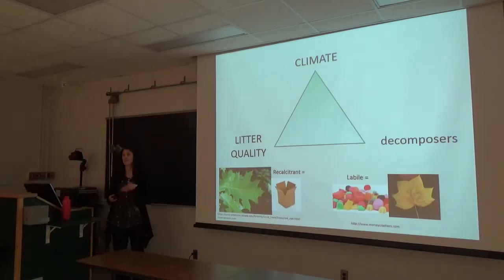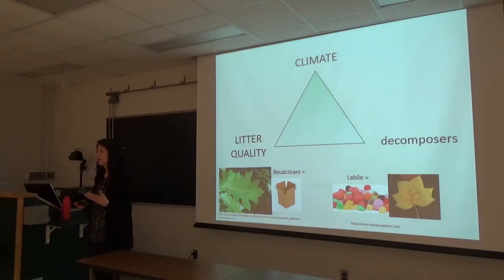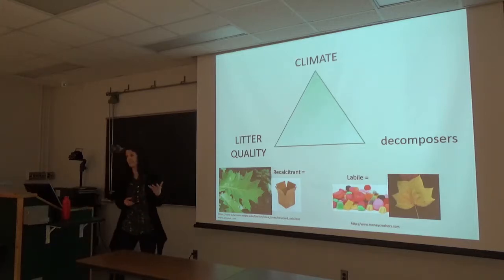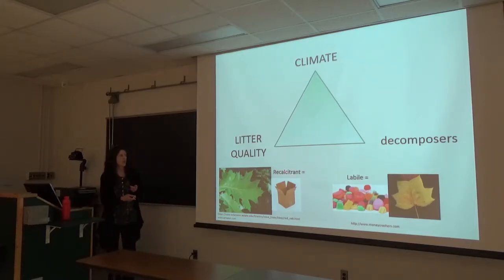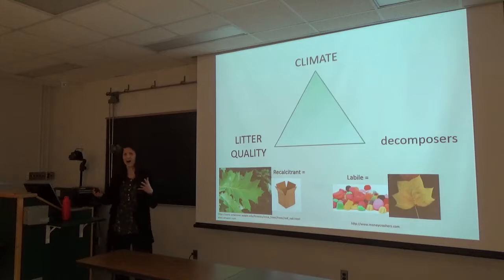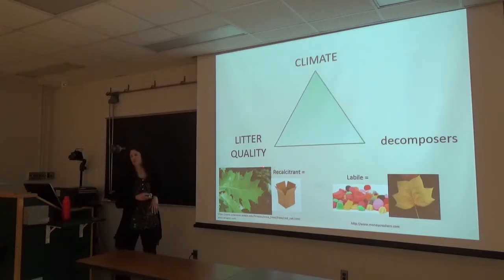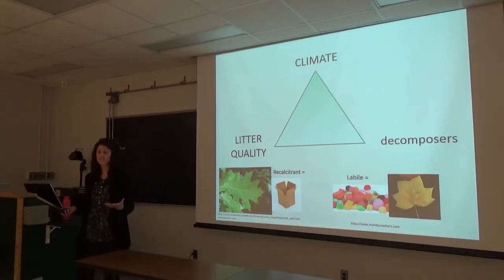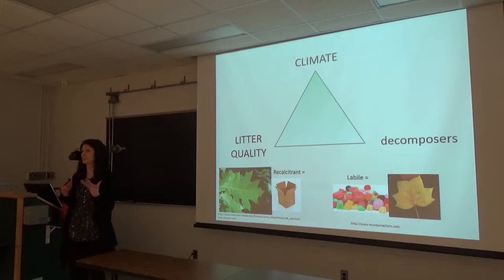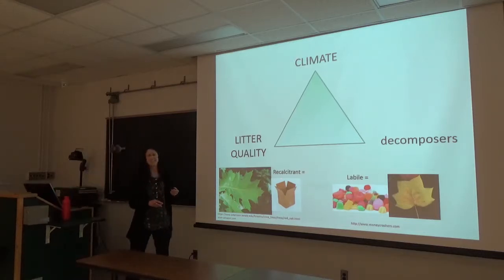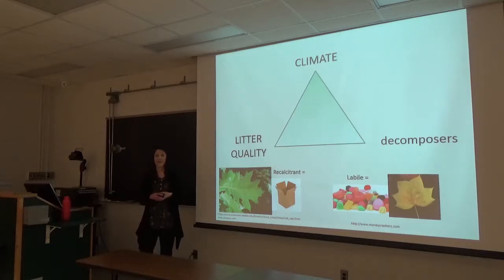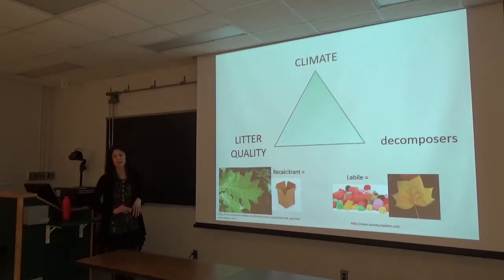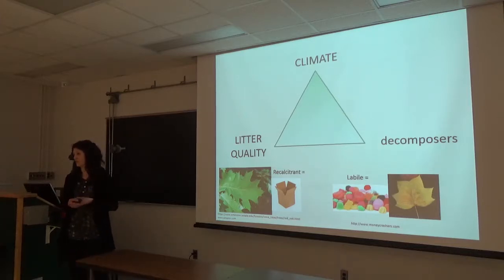When we think about litter quality, there's a range in chemical recalcitrance that mainly decides how fast litter can decompose. At one end, we have recalcitrant litter—like trying to chew through a cardboard box—high in carbon, with a high C:N or high lignin:N ratio. At the other end, we have labile litter, more easy to decompose, like candy—high energy return, easy to break down, with low C:N or low lignin:N ratios. This range in chemical lability is a direct driver of decomposition rates.